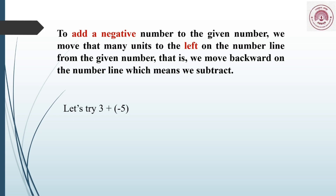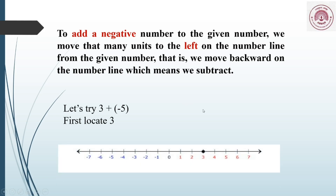Let's see using an example: 3 plus minus 5. When you are adding a negative number, we have to move to the left. The steps are the same — first we have to locate the first number, which is 3. We are adding a negative number, minus 5, so that means we have to move 5 steps to the left.